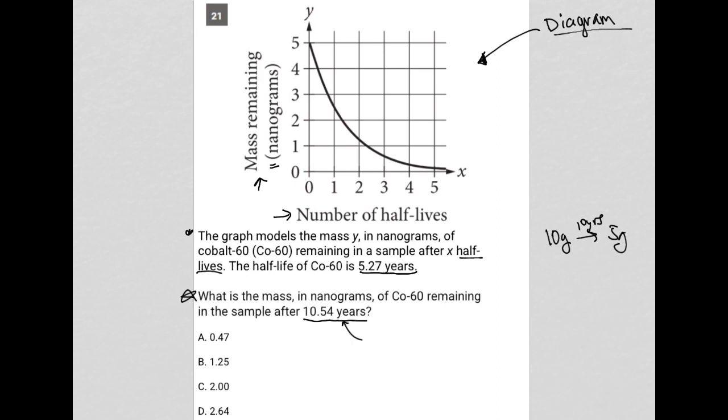How do these relate to each other? We were given 5.27 years as the half-life. We're asked for how much cobalt-60 is remaining after 10.54 years. We have a graph here where each of these values represents a half-life.